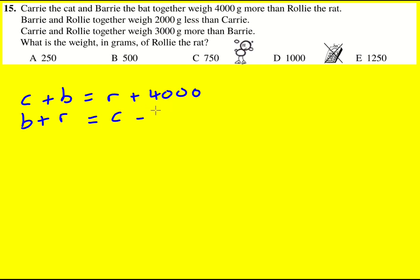So I'm going to need to take Carrie's weight and minus 2,000, so B + R = C - 2000. And finally, Carrie plus Rolly is going to be 3,000 more than Barry, so it's going to be C + R = B + 3000.